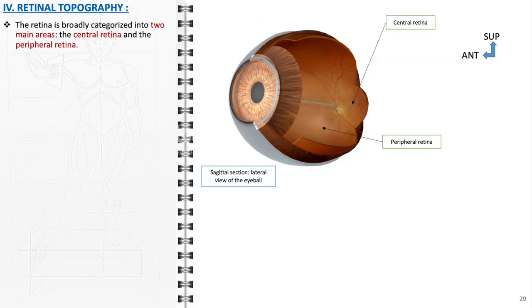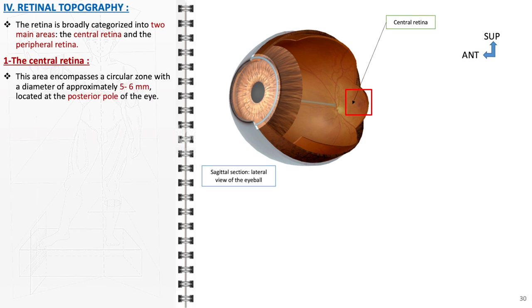Retinal topography refers to the specialized structural arrangement and distribution of different regions within the retina, each playing a unique role in visual perception. The retina is divided into two main areas, the central retina and the peripheral retina, each with its distinct characteristics. The central retina is primarily focused on high-resolution color vision and is essential for tasks that require detailed vision, such as reading and recognizing faces. This area includes a circular zone approximately 5 to 6 mm in diameter, located at the posterior pole of the eye.